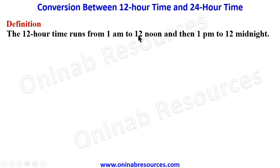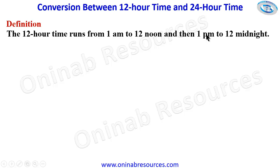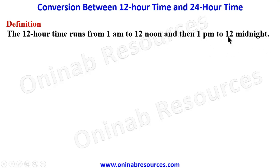When it is 12 noon, it can also be read as 12 p.m. From 12 noon down to 12 midnight, it is now read as p.m. So from 12 p.m. we have 1 p.m. up till 11:59 p.m. at midnight. When it is 12 midnight, it can be read as 12 a.m. So the difference is that 12 noon is 12 p.m., and 12 midnight is 12 a.m.